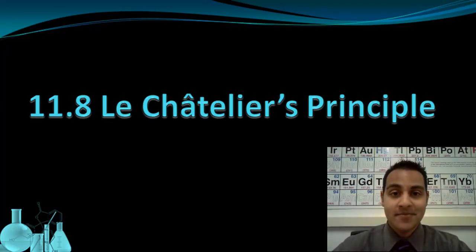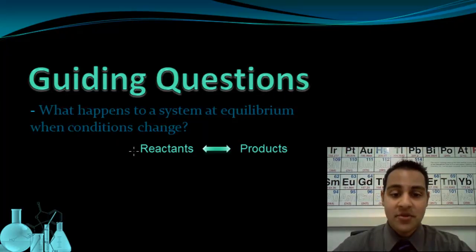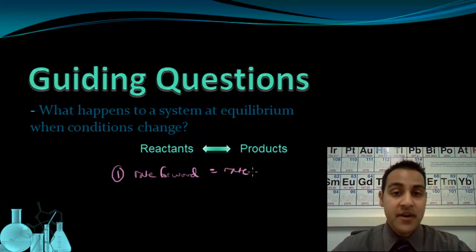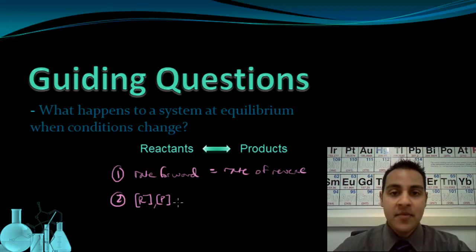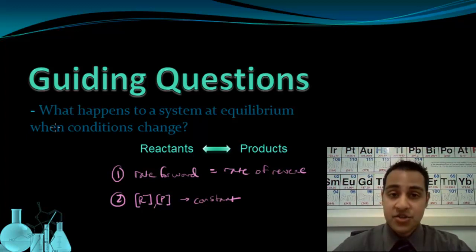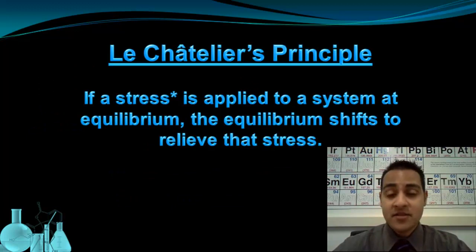Welcome to Le Chatelier's Principle. Given a reaction at equilibrium, we know that the rate of the forward reaction equals the rate of the reverse reaction, and the concentrations of reactants and products are constant. This state of balance can be modified if conditions change — this is Le Chatelier's Principle, which states that if a stress is applied to a system at equilibrium, the equilibrium shifts to relieve that stress.